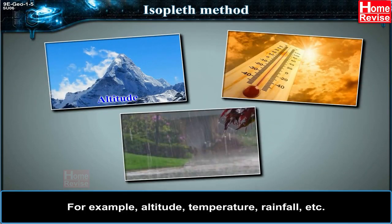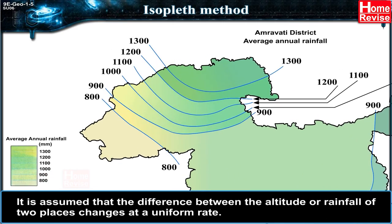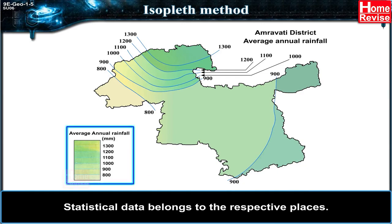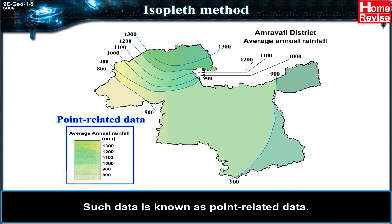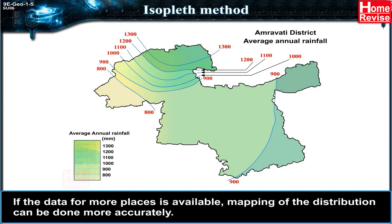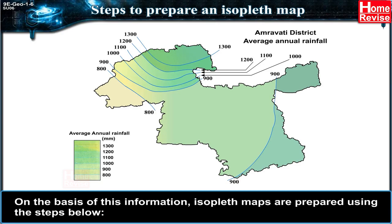For isopleth maps, accurate data regarding altitude, temperature, or rainfall of several places in a region is needed. It is assumed that the difference between the altitude or rainfall of two places changes at a uniform rate. Sub-administrative units are not taken into consideration; the statistical data belongs to respective places. Such data is known as point-related data. Values of the variable are written on the map at their respective locations, and the more data points available, the more accurate the mapping.